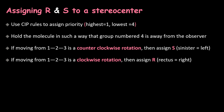After that, move from atom 1 to 2, then 2 to 3. If we get a counterclockwise rotation, then assign the letter S to that stereocenter. If moving from 1 to 2, 2 to 3 gives us a clockwise rotation, then assign the letter R to that stereocenter.